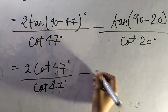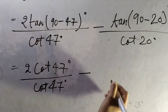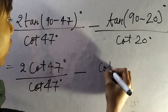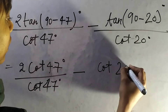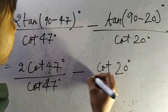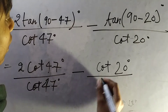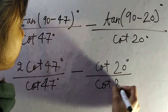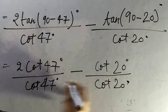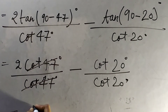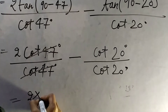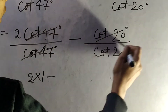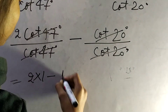Minus tan(90°−20°)/cot(20°), which gives cot(20°)/cot(20°). Both terms cancel out.